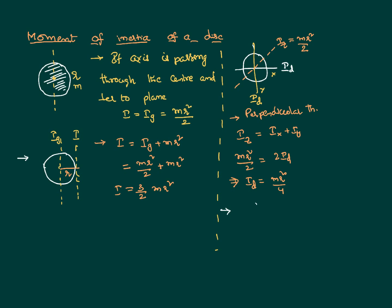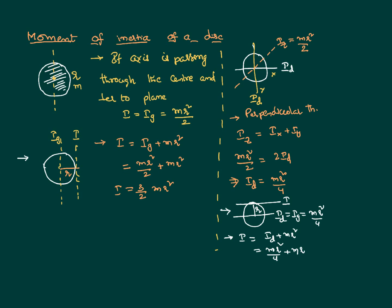Now let us consider another scenario. The disc is the same, and we want to calculate the moment of inertia about a tangential line that lies in the plane. The diameter axis acts as the center-of-gravity axis with I_G = MR²/4. The tangential axis in the plane is parallel to the diameter and at a distance R, so using the parallel axis theorem: I = I_diameter + MR² = MR²/4 + MR² = 5/4 MR².